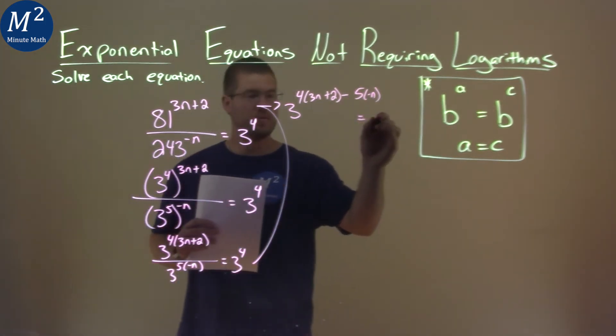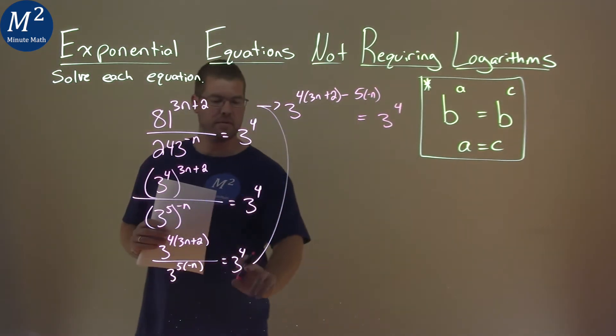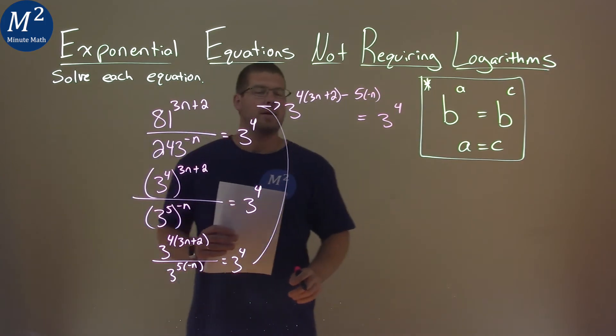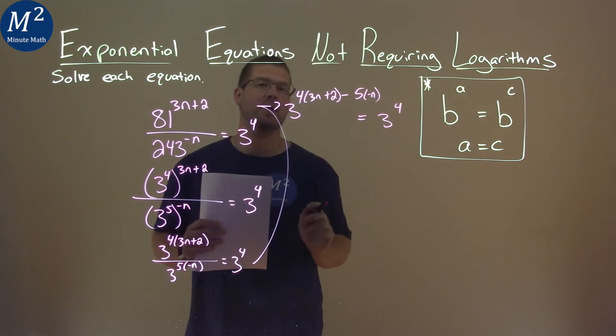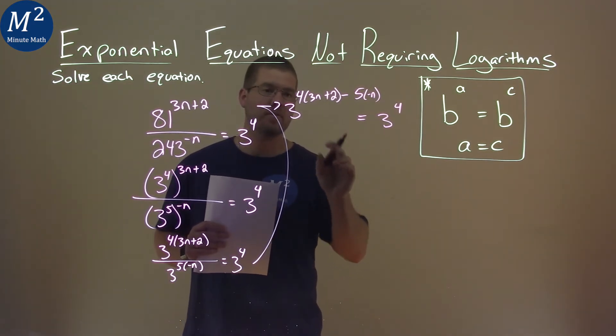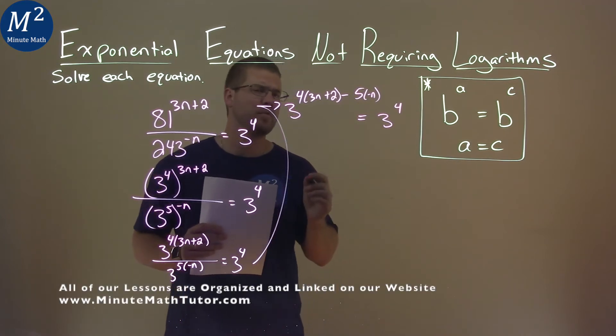Alright, and that's equal to 3 to the 4th power right there on the right-hand side. Keep on going. We have the same base here. It's a big exponent up here, but we have the same base. When that happens, we can set the exponents equal to each other. And while we do that, let's simplify this a little bit.